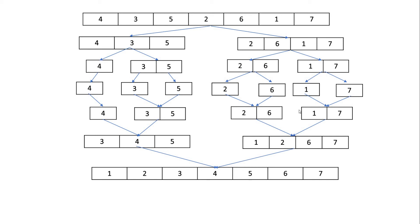Comparing the first elements 2 and 1: 1 is smaller so we bring down 1, then compare 2 and 7 — 2 is smaller, bring it down, then 6 and 7 — 6 is smaller, bring it down, and 7 is the only remaining element. Now combining the two arrays: 1 and 3 — 1 is smaller, bring it down; 2 and 3 — 2 is smaller; 3 and 6 — 3 is smaller; 4 and 6 — 4 is smaller; 5 and 6 — 5 is smaller; 6 and 7 — 6 is smaller; then 7 is the final element.